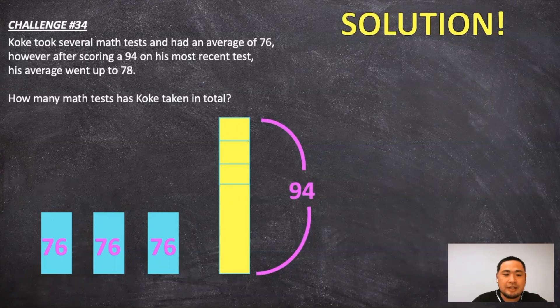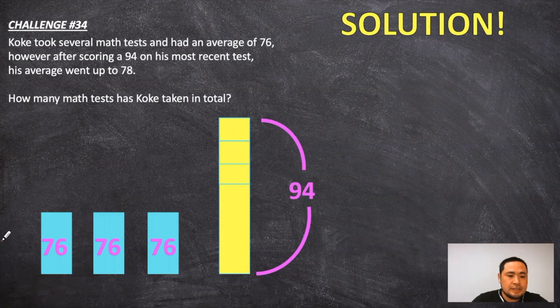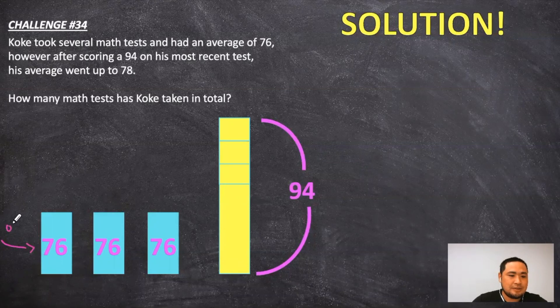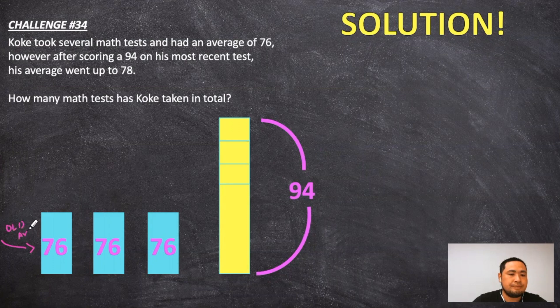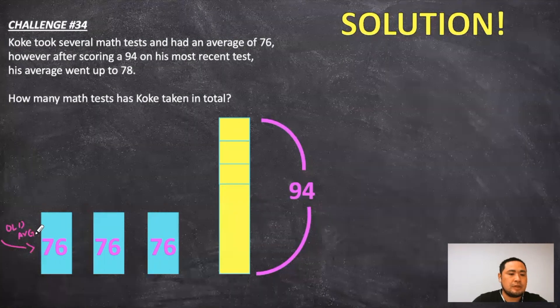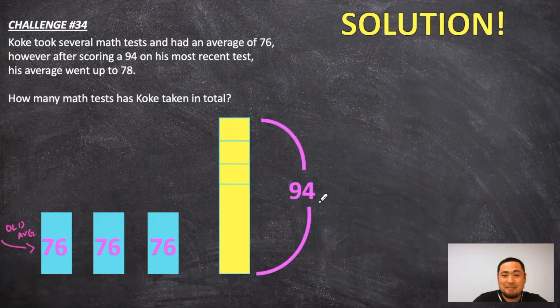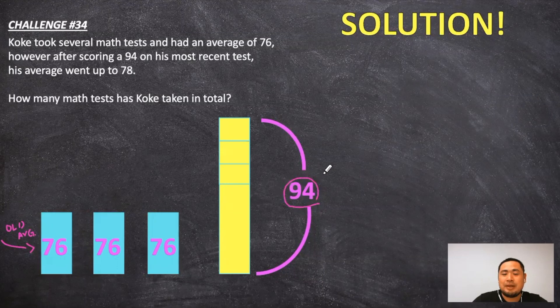So let's start off by clarifying the bar graph down below. These 76's represent my old average test scores. These are my old averages. And then I don't know what happened on a really good day, but I managed to score a 94 on my most recent test right here.